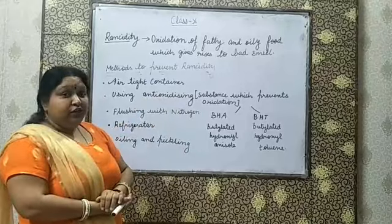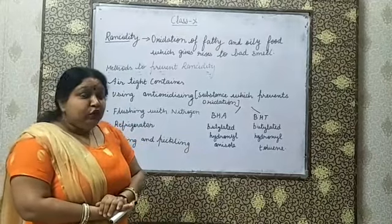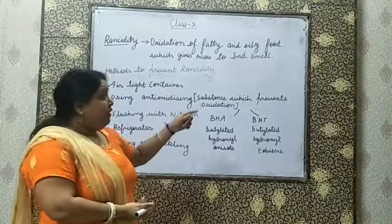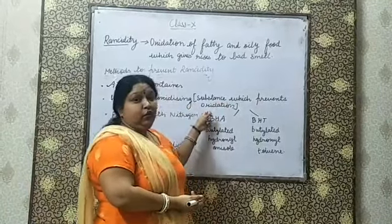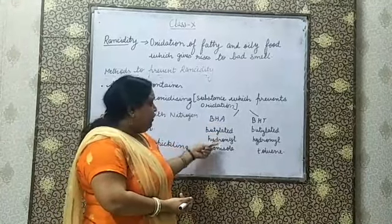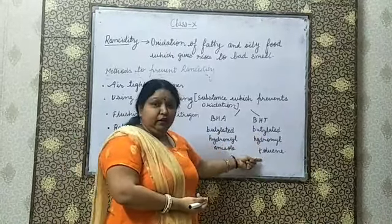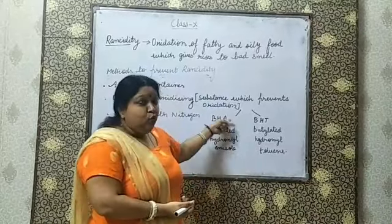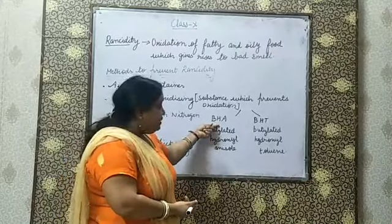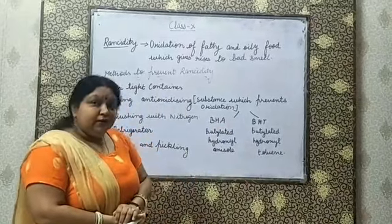The next method is by using anti-oxidizing agents. Anti means opposite — substances which stop the supply of oxygen. They are called antioxidants, substances which prevent oxidation. For example, we have BHA, which means butylated hydroxyl anisole, and BHT, which means butylated hydroxyl toluene. We can use BHA and BHT as antioxidants to prevent our food material from rancidity.